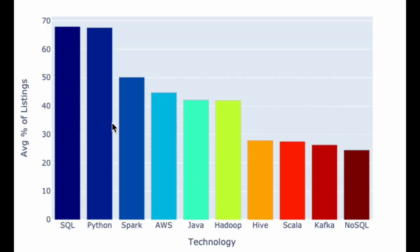To become at least a basic data engineer, there are certain skills you should learn first: SQL, Python, Spark, and a cloud platform like AWS. Java is optional if you've already learned Python. Hadoop is also optional if you're very good at Spark. Hive is kind of outdated nowadays. Scala is optional if you're good with Python. Kafka and NoSQL are also on the list. I'm not going to go into depth on each skill here, because I've created a data engineering roadmap video — I'll link it in the description below.